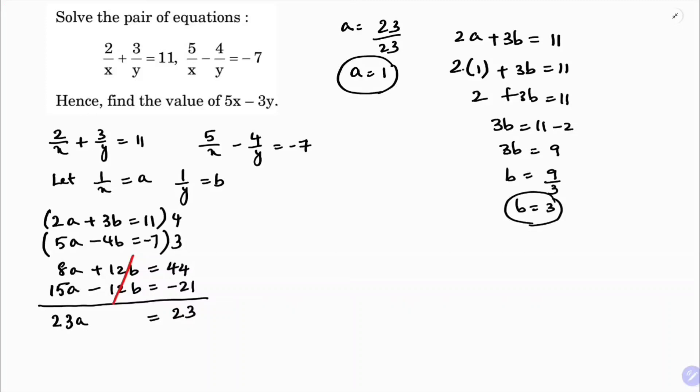The value of b is 3, but we need to find x and y. Since a = 1/x and a = 1, we have 1/x = 1, so x = 1. Since b = 1/y and b = 3, we have 1/y = 3, so y = 1/3.